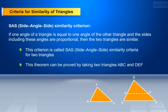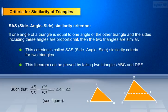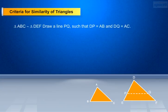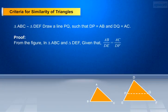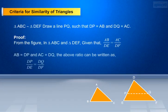This theorem can be proved by taking two triangles ABC and DEF such that AB/DE equals CA/FD and angle A equals angle D. To prove: triangle ABC is similar to triangle DEF. Draw a line PQ such that DP equals AB and DQ equals AC. From triangle ABC and triangle DEF, we get AB/DE equals AC/DF. By using the basic proportionality theorem, with AB equals DP and AC equals DQ, the above ratio can be written as DP/DE equals DQ/DF.